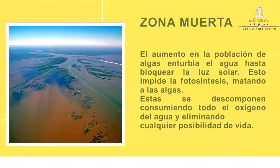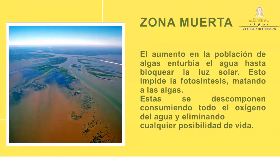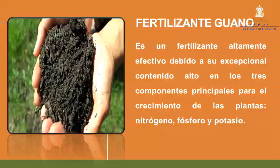Zona muerta: el aumento en la población de algas enturbia el agua hasta bloquear la luz solar, lo que impide la fotosíntesis matando a las algas. Estas se descomponen consumiendo todo el oxígeno del agua y eliminando cualquier posibilidad de vida. Fertilizante guano: es un fertilizante altamente efectivo debido a su excepcional contenido alto en los tres componentes principales para el crecimiento de las plantas: nitrógeno, fósforo y potasio.